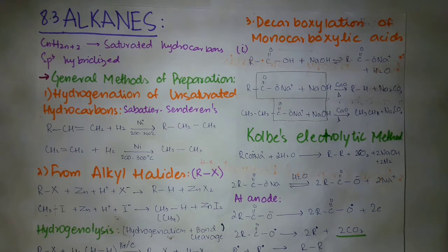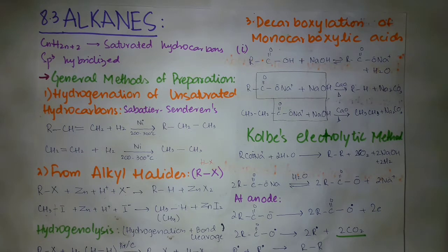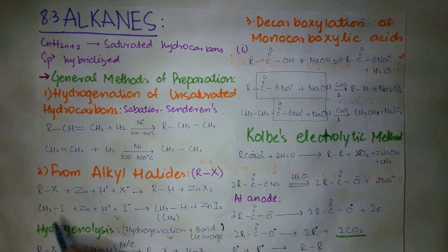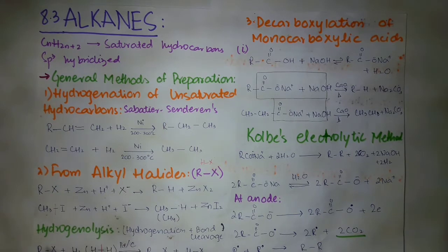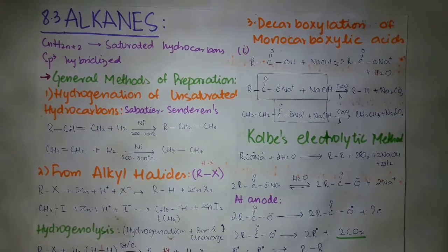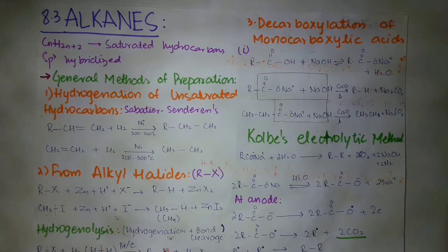Another process using alkyl halides for the preparation of alkanes is hydrogenolysis, which is different from hydrogenation. In hydrogenation, we simply add hydrogen across a double or triple bond. But in hydrogenolysis, the hydrogenation is accompanied by bond cleavage. The alkyl halide R–X reacts with H2: the R–X bond cleaves, R combines with H to form R–H, and X combines with H to form HX. This reaction happens in the presence of palladium on charcoal with some heat. In hydrogenation there is no bond cleavage, while in hydrogenolysis hydrogen is added plus there is bond cleavage.